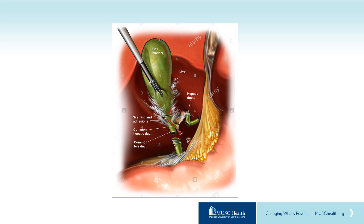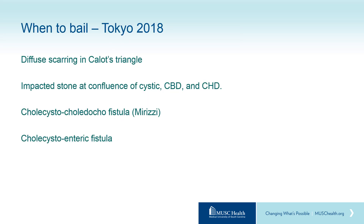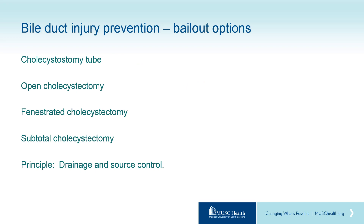In 2018, an expert consensus guideline was released from Tokyo with management guidelines for acute cholecystitis, with a specific goal of reducing the incidence of bile duct injuries. Their recommendations for when to bail out include diffuse scarring in Calot's triangle, an impacted stone at the confluence of the cystic duct, common bile duct, and common hepatic duct, a cholecystocholedochofistula (also known as Mirizzi syndrome), or a cholecystoenteric fistula such as cholecystocolonic or cholecystoduodenal.